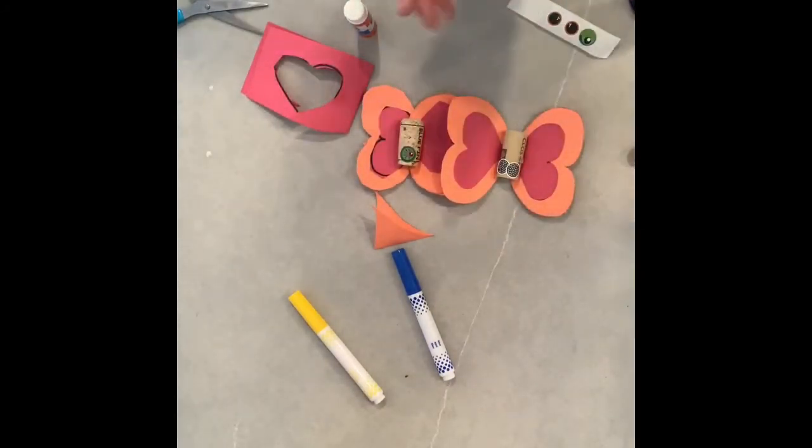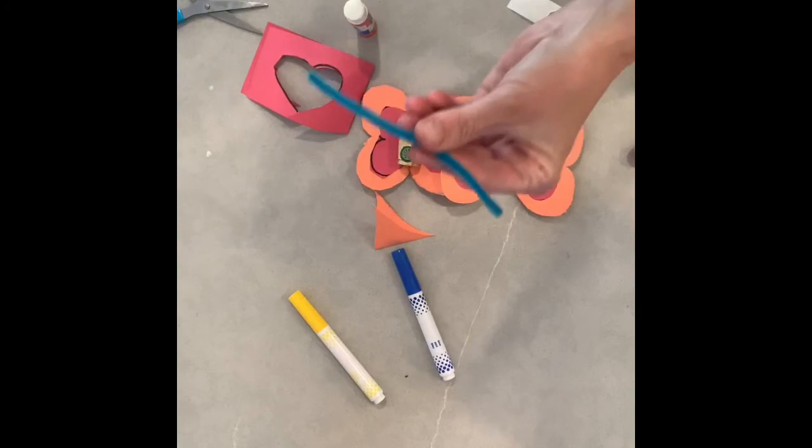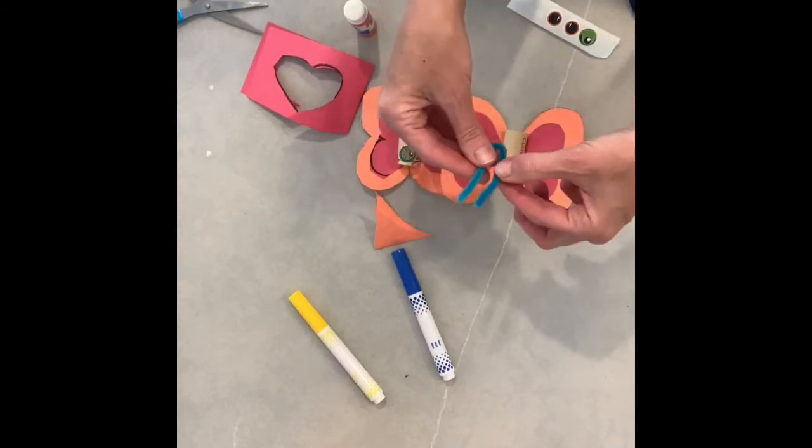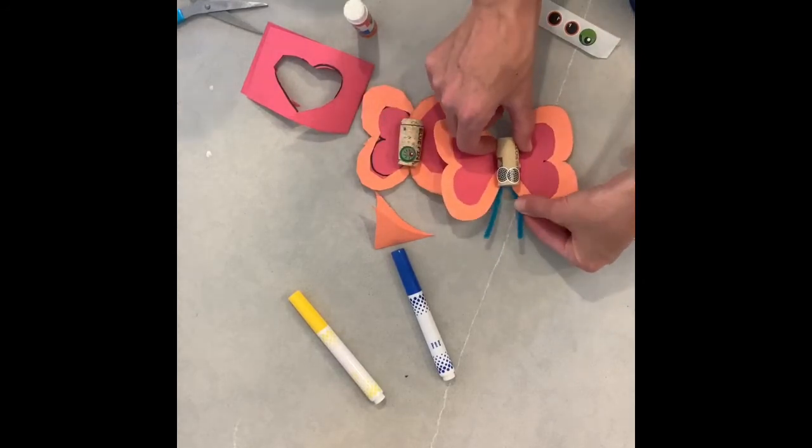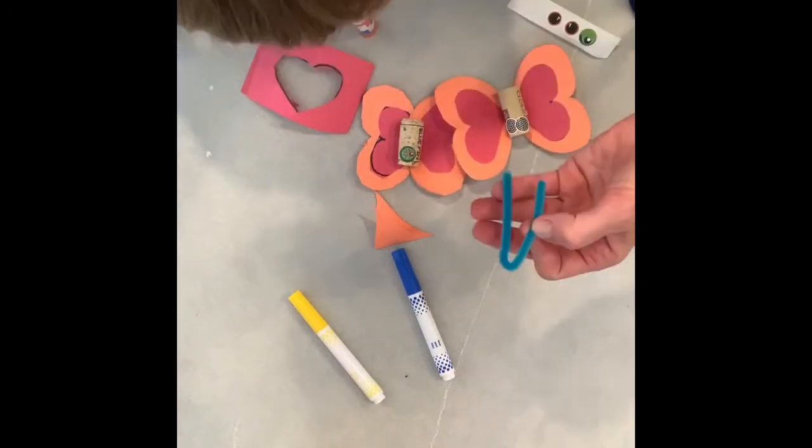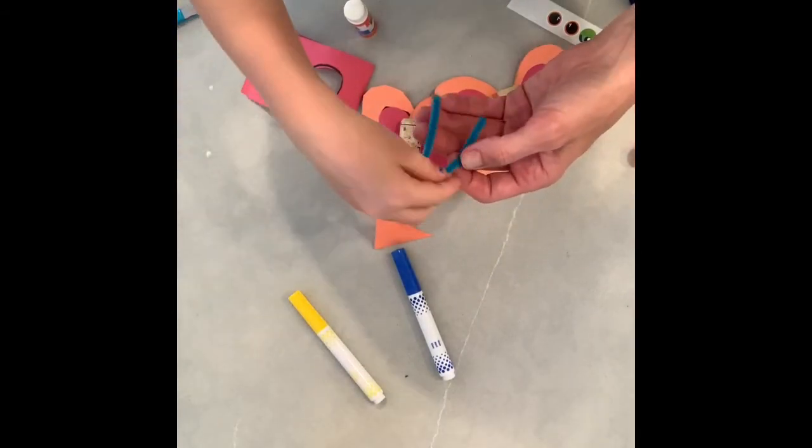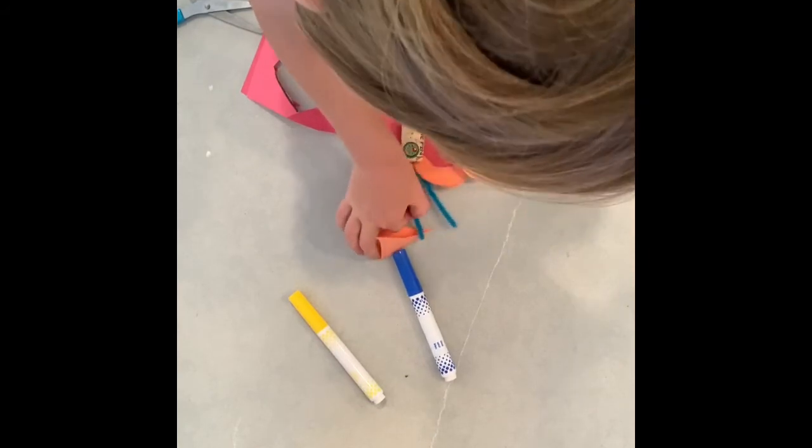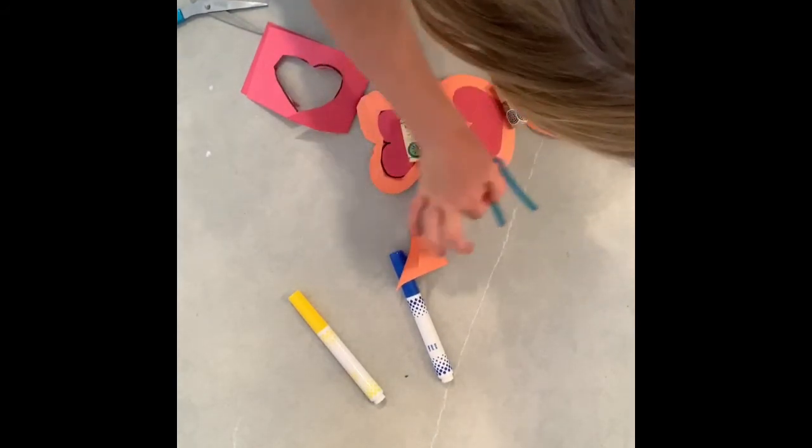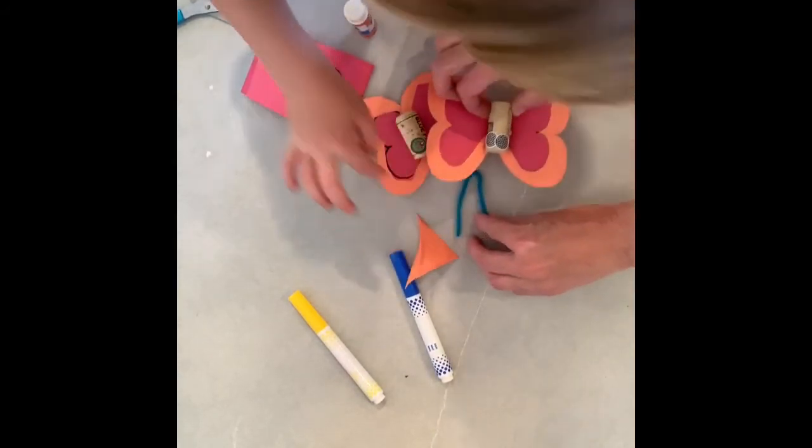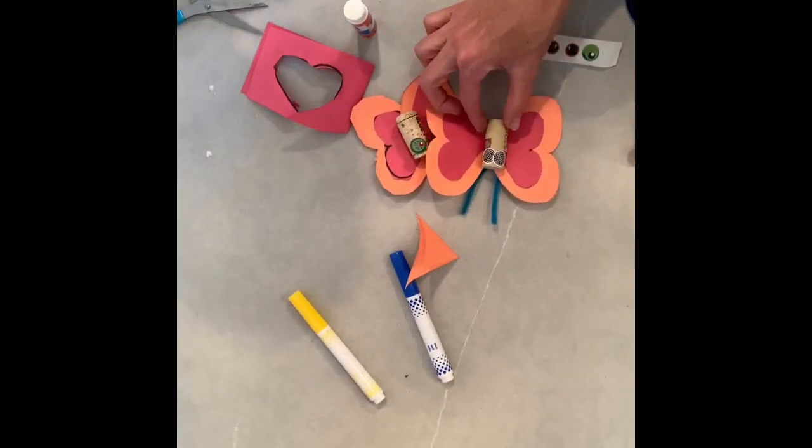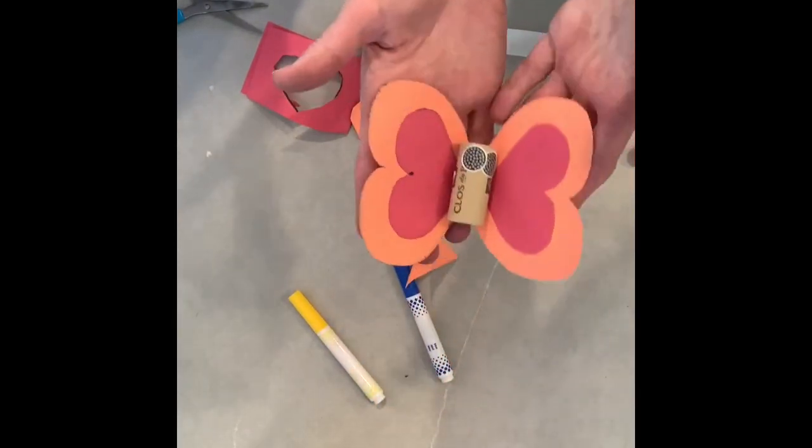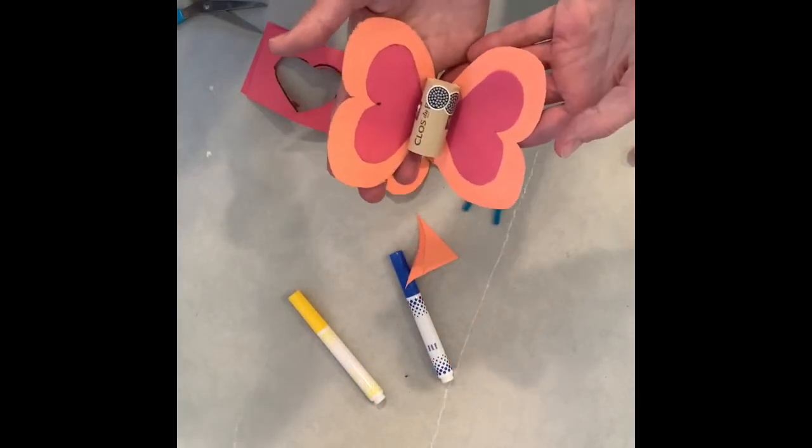Okay and then if you want you could use your pipe cleaners and glue those on the back and then you have little antennas. But these you can also use with the beads that came in your kit. So it's your choice if you want to use them for your butterfly or if you'd rather keep them for your beads. But that's another option of something to do with those pipe cleaners. So let's see what it would look like. Like this. Right? Little antennas. Otherwise, there you have your cute little cork butterfly.